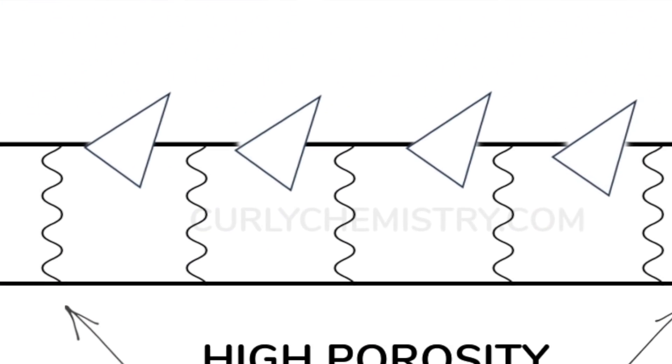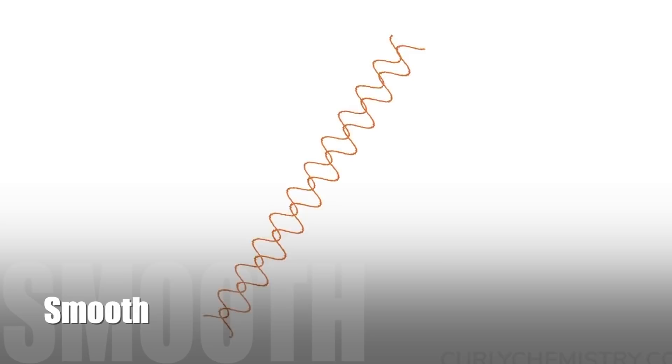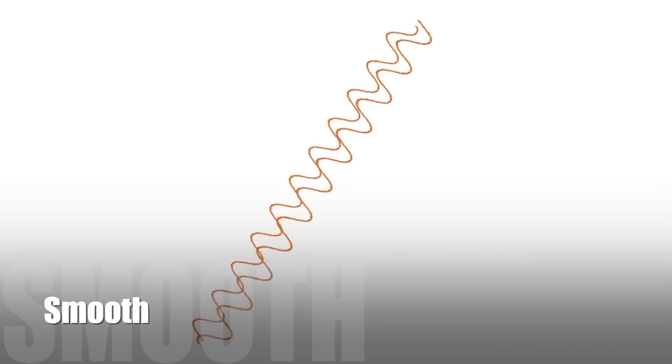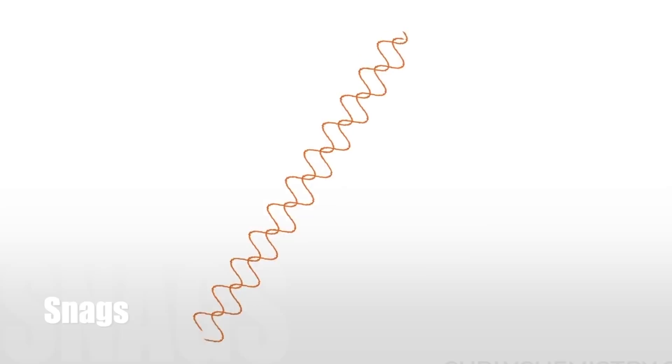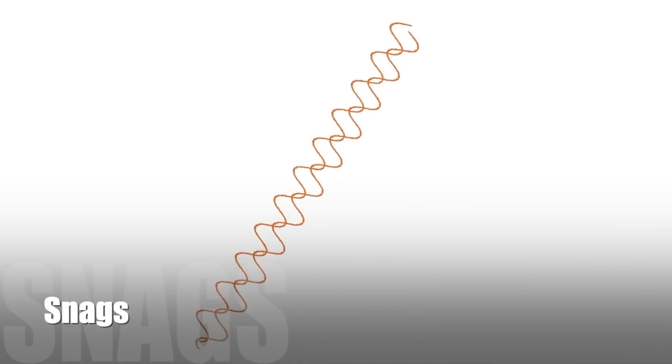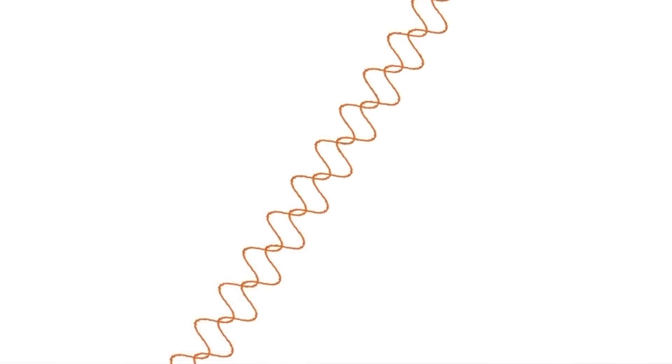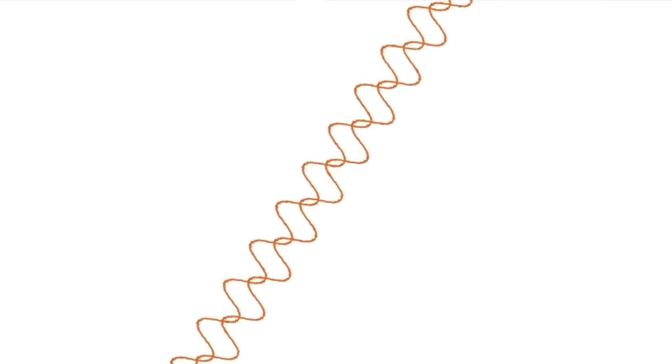With high porosity hair, there is the exception of the fact that you have a lifted cuticle. What happens is that when your hair glides past each other, instead of gliding smoothly, because of those lifted cuticles it snags against each other. And this is how tangles come about.